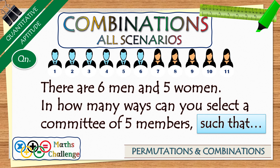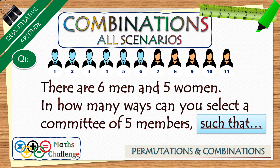Today we are going to discuss the basic question type for combinations. The base question is: there are six men and five women — in how many ways can you select a committee of five members? There could be various constraints, such as selecting exactly one woman, at least three women, or a particular woman in the committee. We will learn how to tackle these constraints.